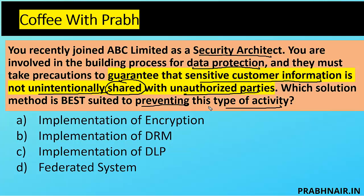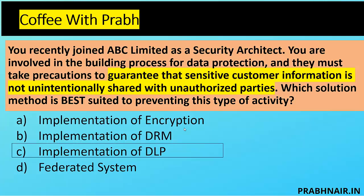DLP can be the answer because DLP ensures data does not leave in an unauthorized manner. It is a solution introduced to control the movement of data going from inside to outside. A federated system is about access management, so option D is removed. Option C (DLP) is very close. By implementing DLP you ensure data is not disclosed to unauthorized parties — even if a user clicks a social engineering link, DLP will restrict that movement. That's why the answer is C.